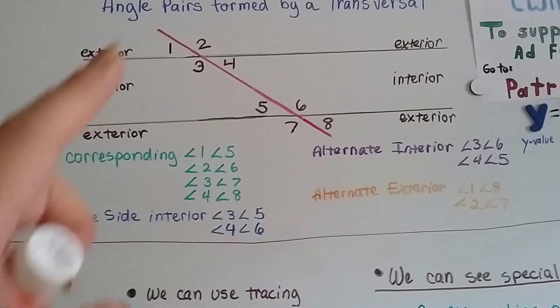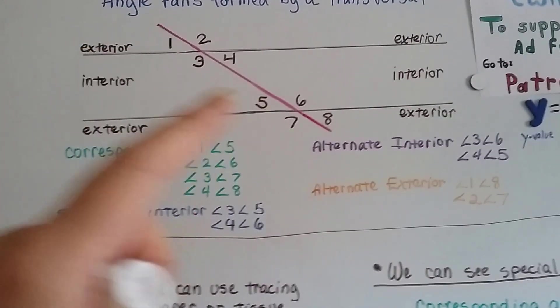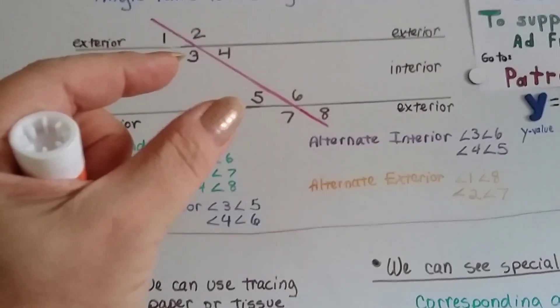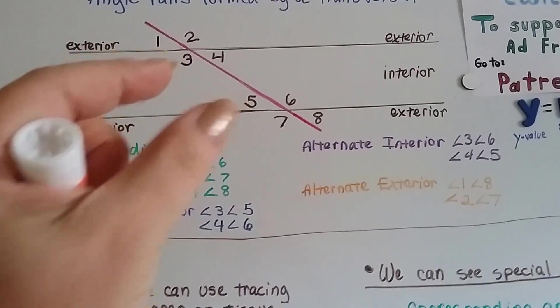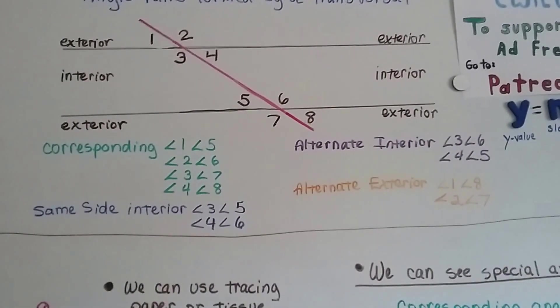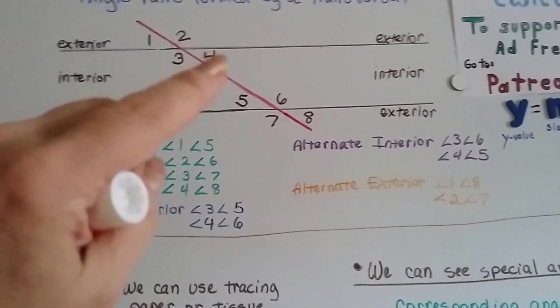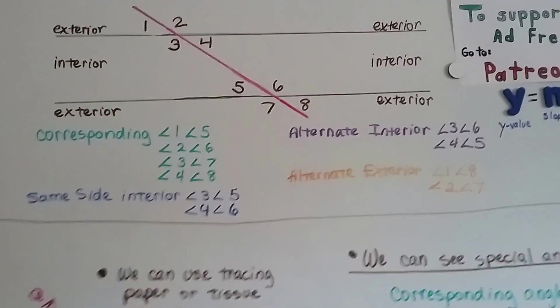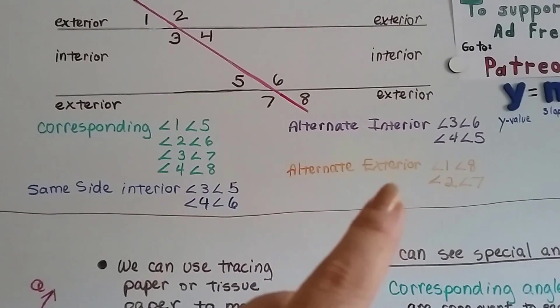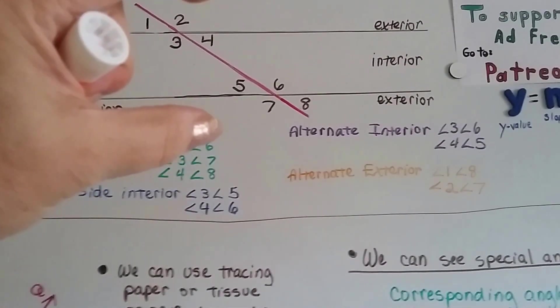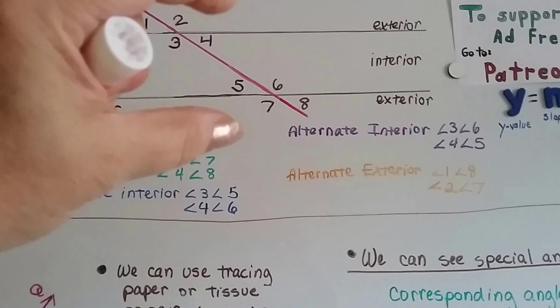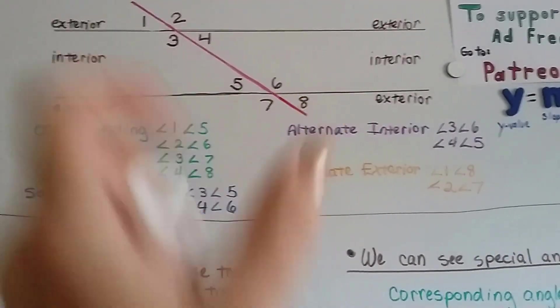We've got corresponding angles like 1 and 5. They're the same measure. We've got same side interior angles. They're in the interior on the same side of the transversal like 3 and 5. We have alternate interior ones, so they're going to be in the interior. But they're alternate, so 4 and 5 would be alternate ones. And alternate exterior ones are on opposite sides, alternate sides of the transversal. And they're in the exterior of the parallel lines, like 2 and 7 or 1 and 8.